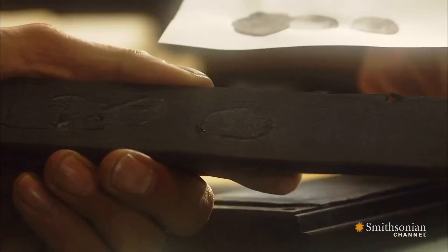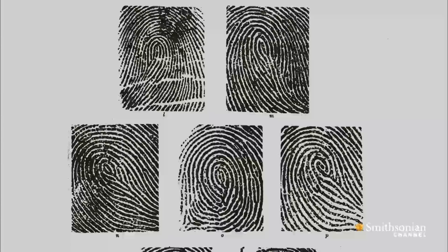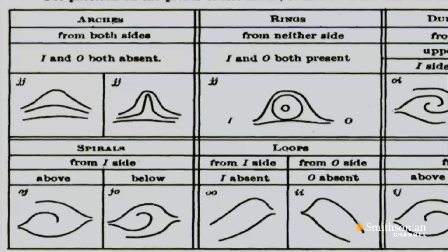But how will they know for sure if the prints match up? What they were looking at is the pattern of what we call friction ridges — that's what allows us to grasp and hold stuff. But the arrangement of the friction ridges is complex; there are all kinds of lines and circles and dots. So Vucetich comes up with a way to simplify the classification of fingerprints, a method that's still in use today.